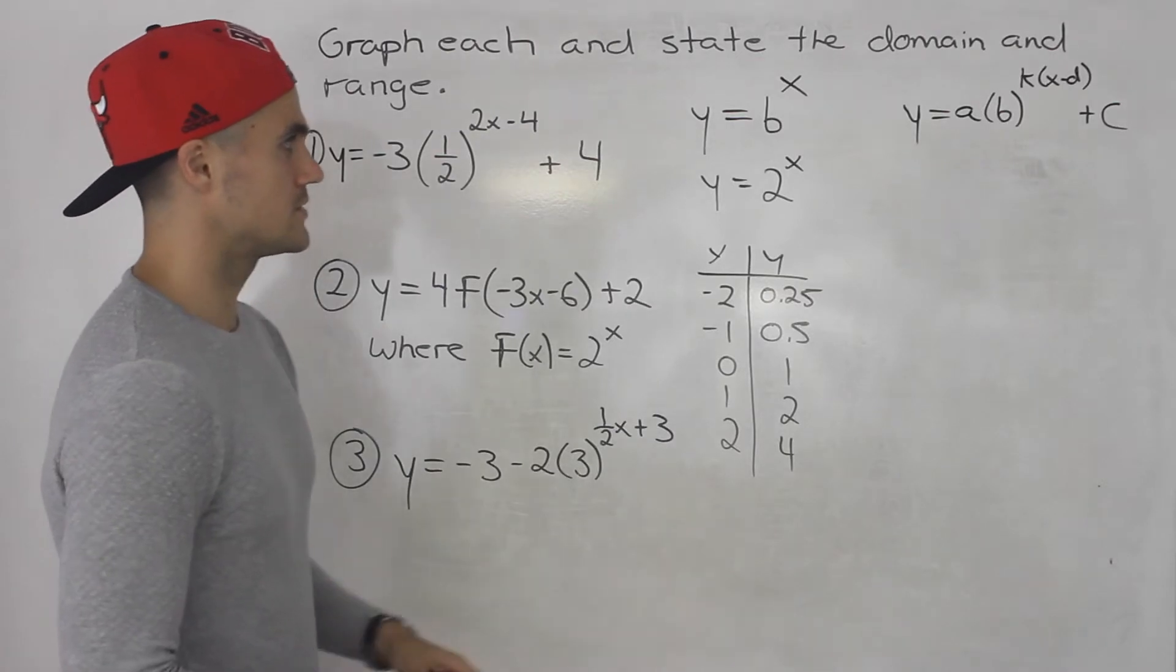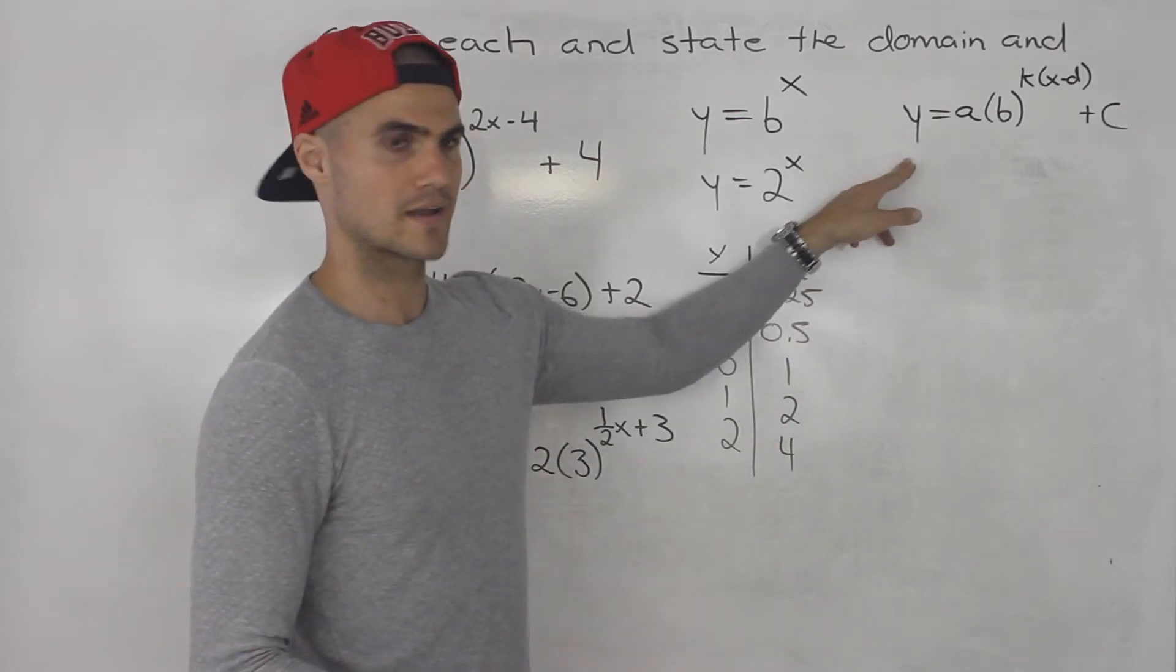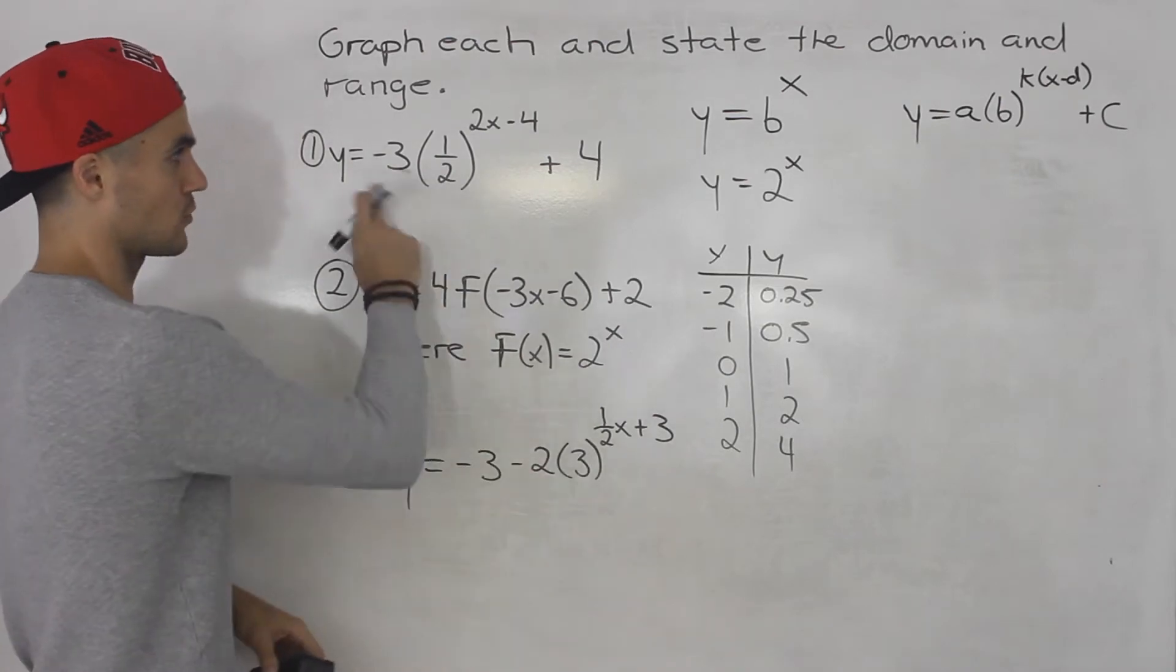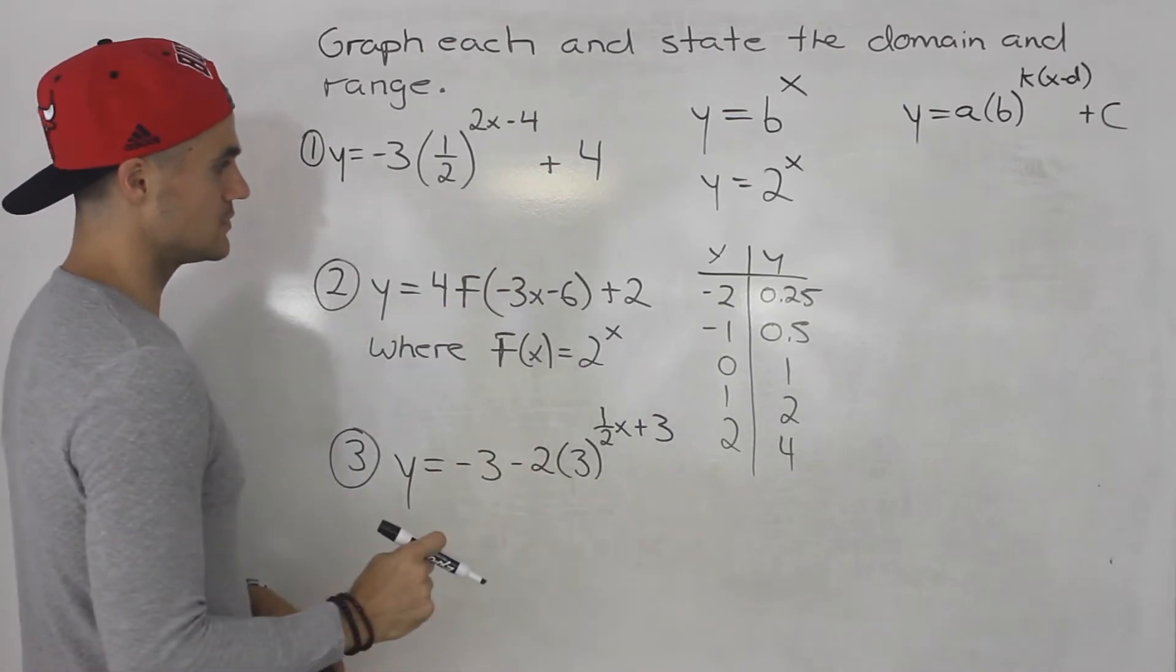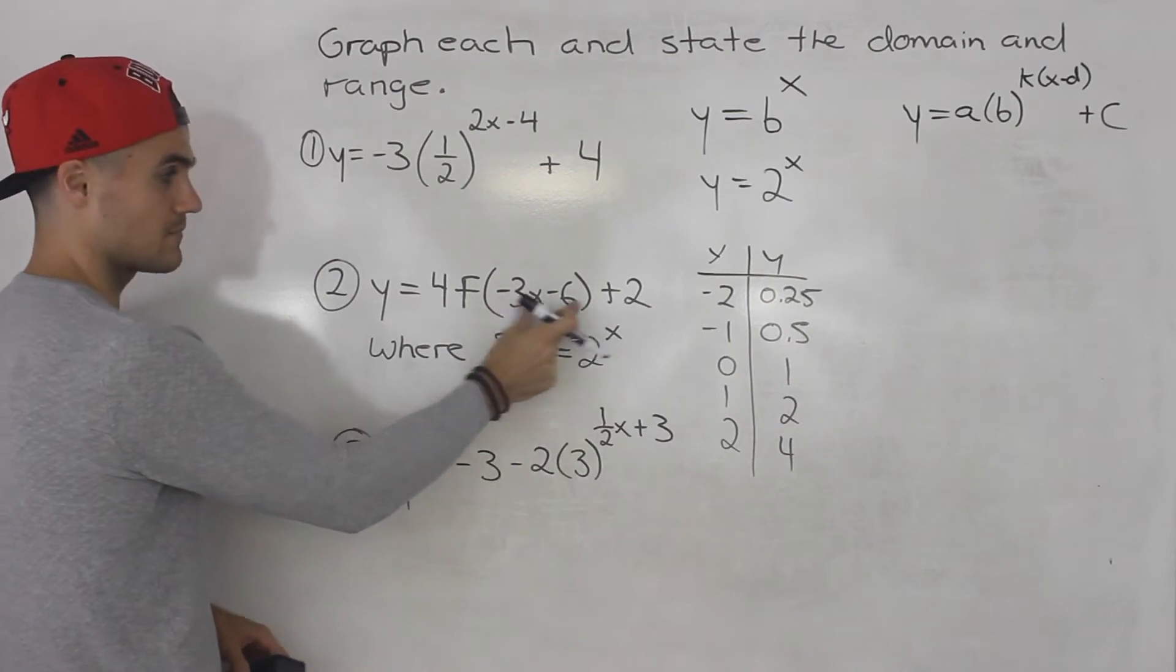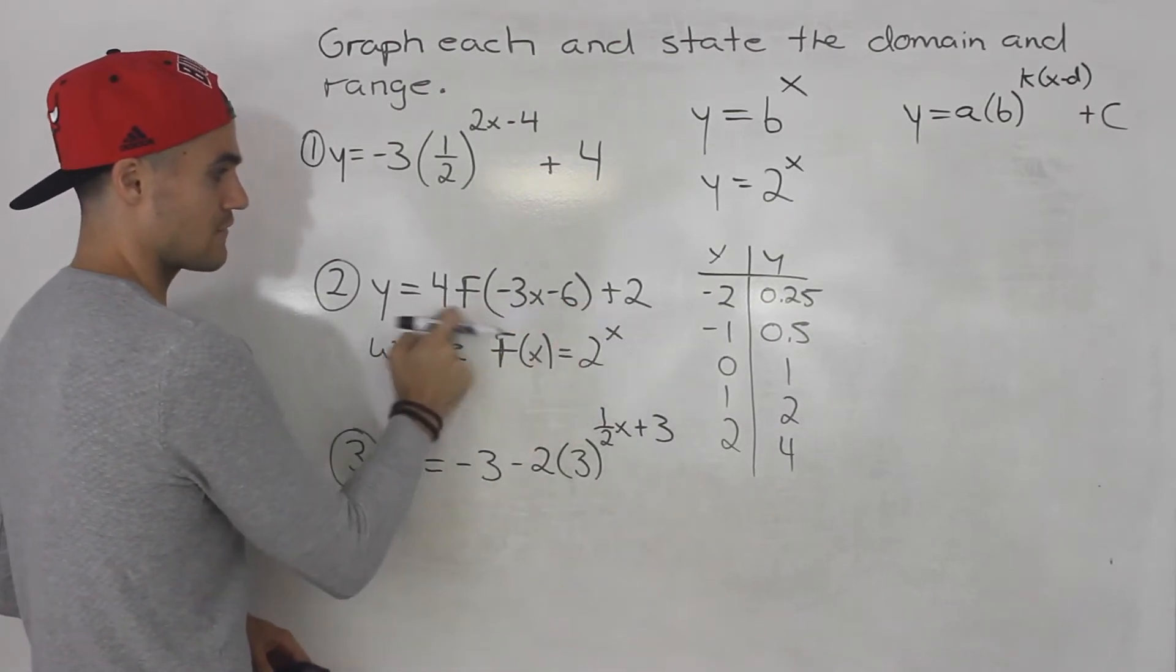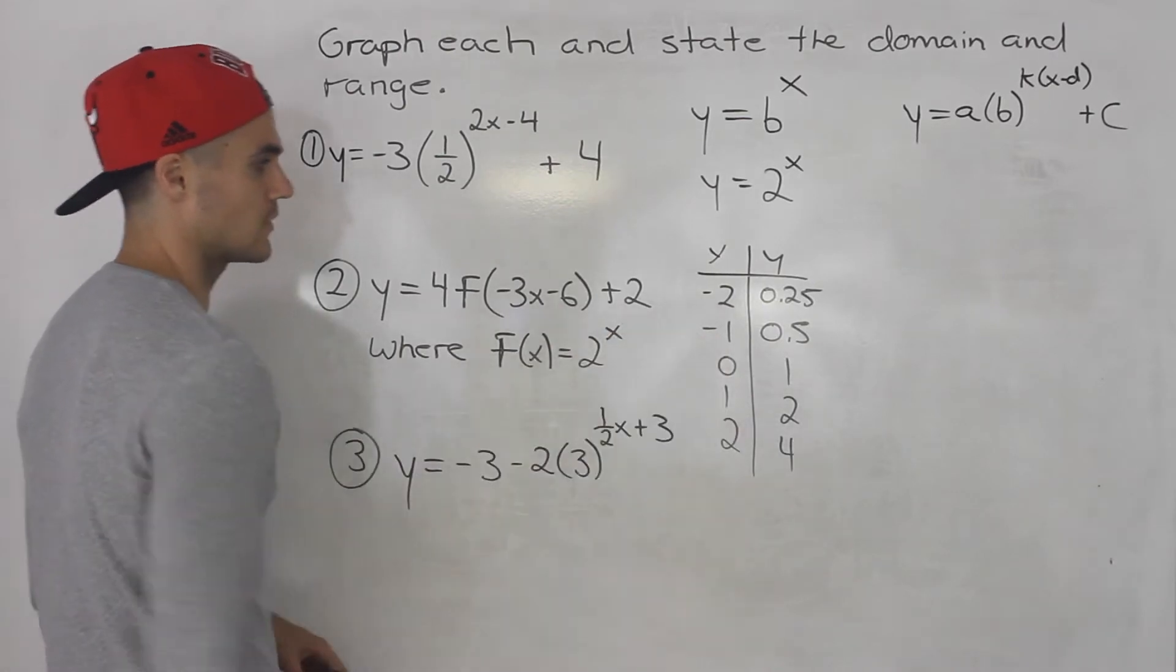And then what you want to do is you want to put it into this format. So you want to switch this general format to a specific format like this. So the way you do that is basically whatever's inside this bracket here is just going to go for the x value in the exponent, then the a value is going to be in front, then the c value outside.